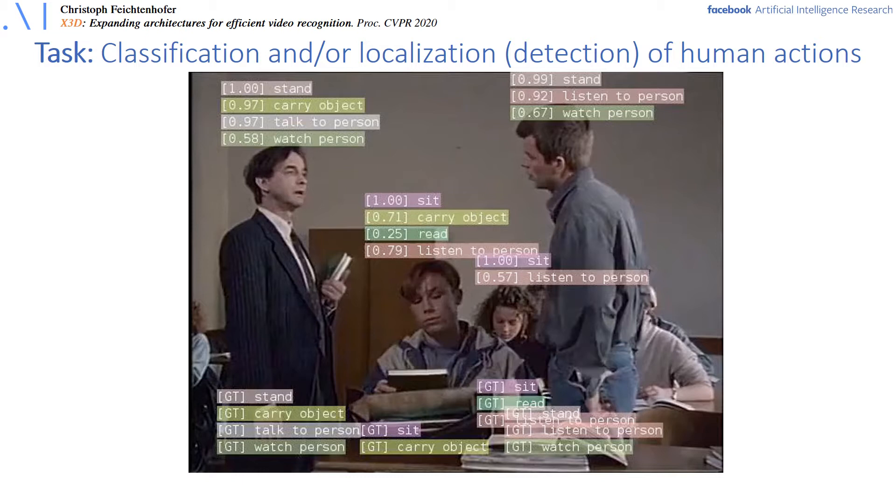For example, the person on the left is standing, carries an object, talks to a person and also watches a person while doing so. Note that many of these actions are not able to be recognized from a single image.